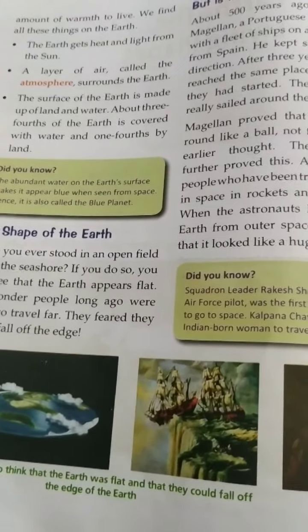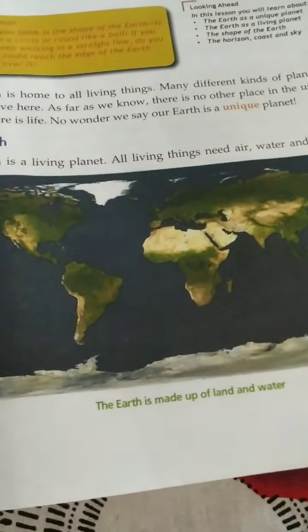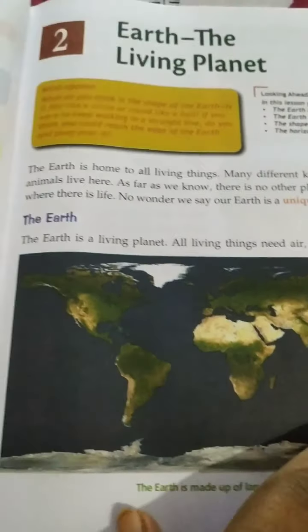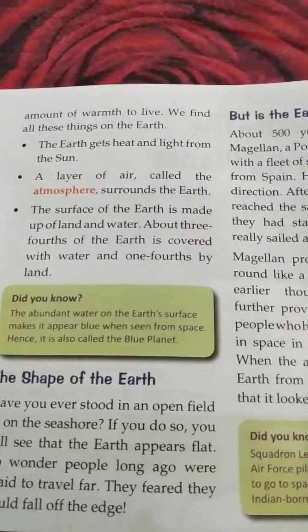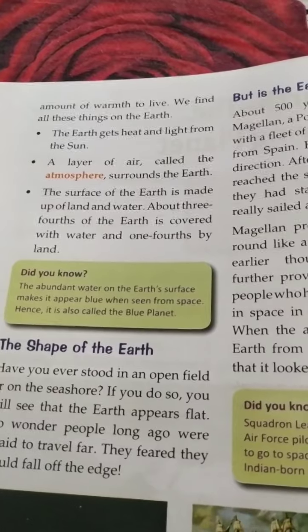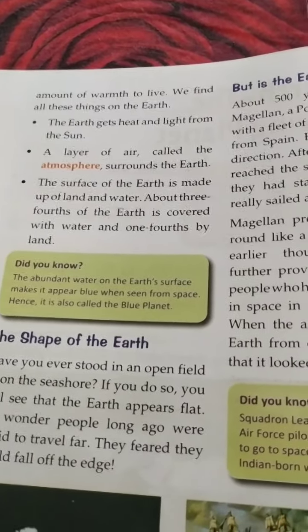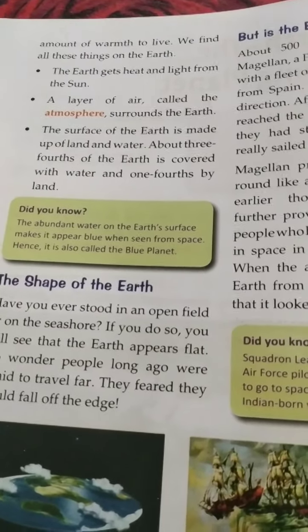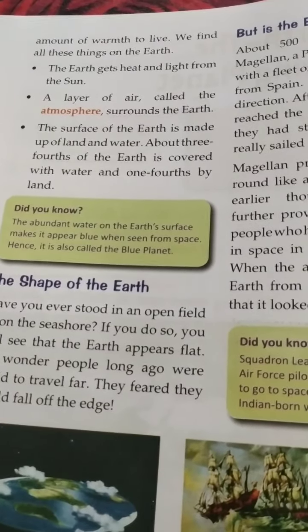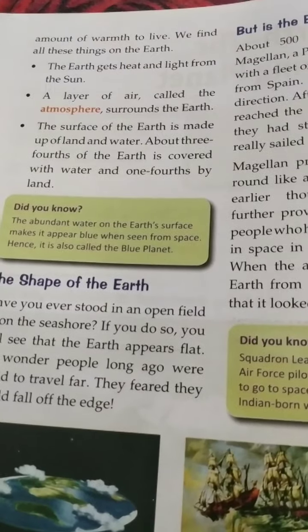The surface of the earth is made up of land and water. About three-fourths of the earth is covered with water, meaning most of the earth is covered by water. Only one-fourth of the area is covered by land. Because three-fourths of the earth is covered with water, earth is also called the blue planet.